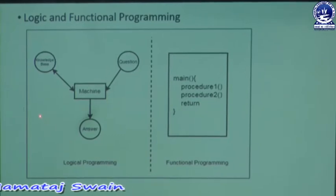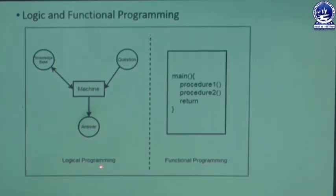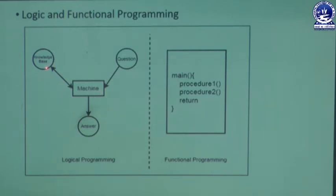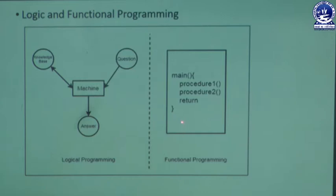Look at this figure. This figure shows the difference between logical programming and functional programming. Logical programming always uses the knowledge base, which works as a database from which the machine takes the information or retrieves the answer according to the question and then gives the answer to the user. But in functional programming, we simply use different procedures to take the input and give the output.